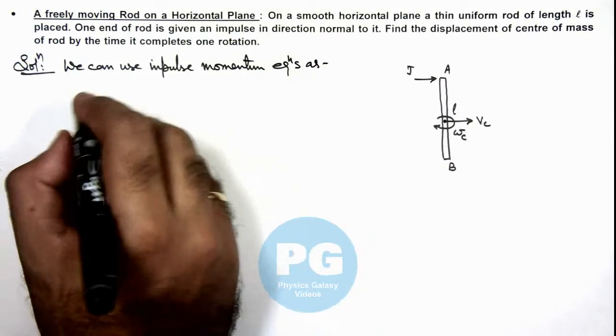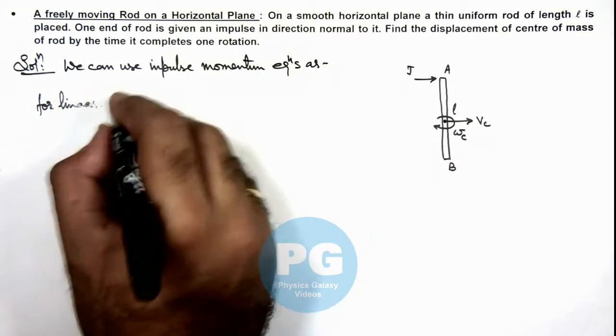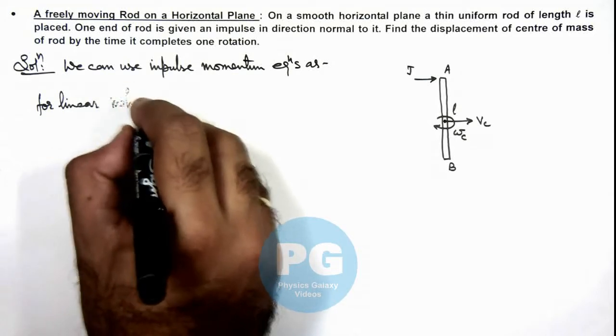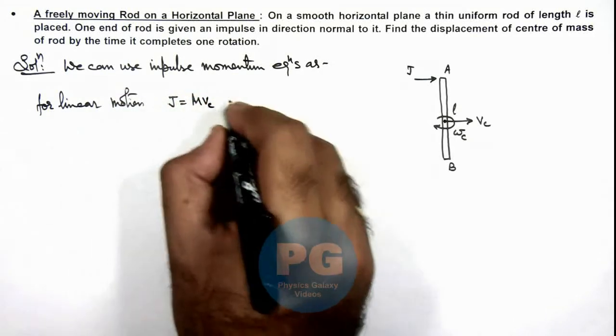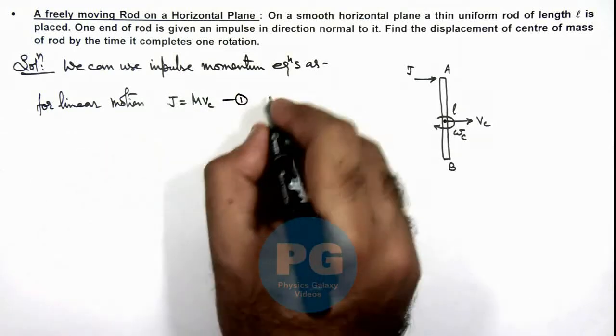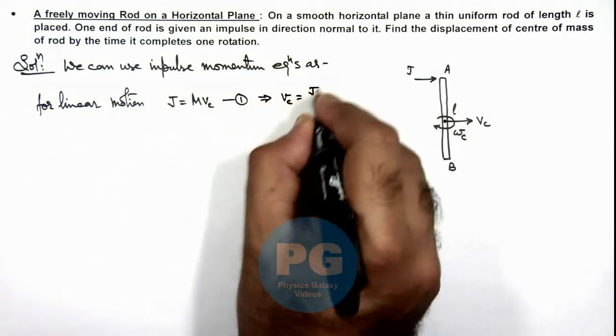For linear motion, we can write j is equal to m v_c. That is say here first equation, which is giving us the value of velocity of center of mass, that is j by m.